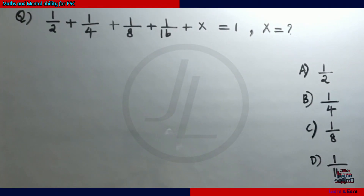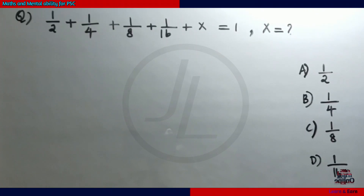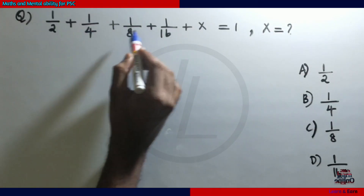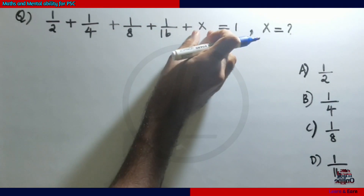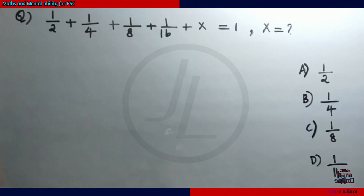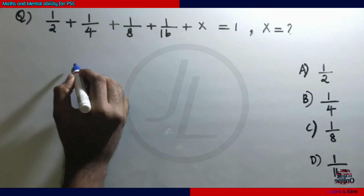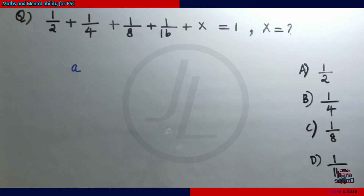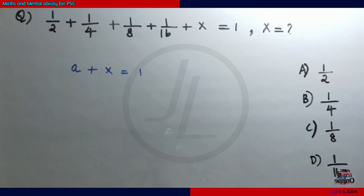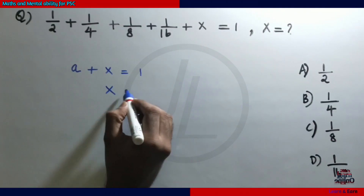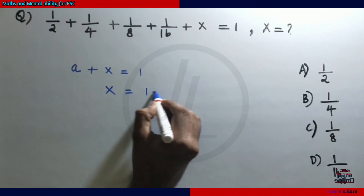Now consider the sequence: 1 by 2, 1 by 4, 1 by 8, 1 by 16. We have 1 by 2, then 1 by 4 repeated, continuing the pattern. X is equal to 1 minus a.